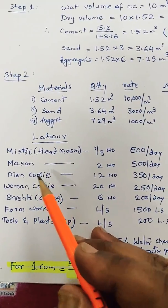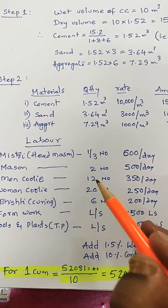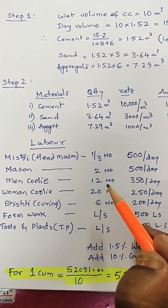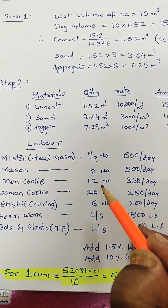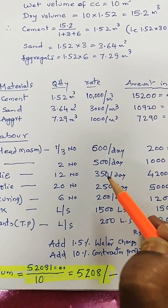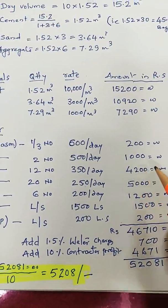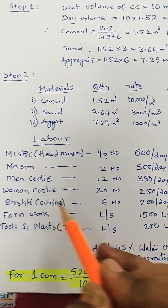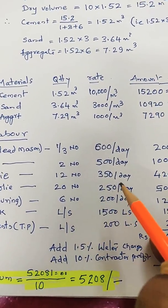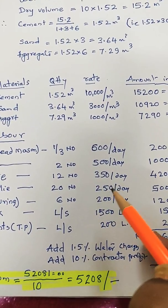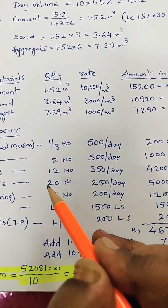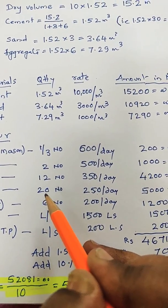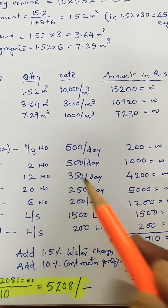Similarly men coolie: 10 numbers for 10 cubic meters in foundation, 350 per day is 4,200 rupees. Women coolie—since they are available at cheaper rates, number will be more: 20 numbers required for 10 cubic meters, 250 per day is 5,000 rupees.